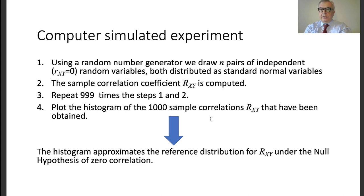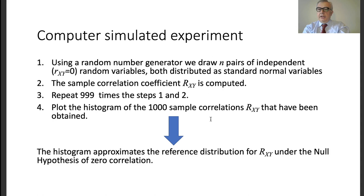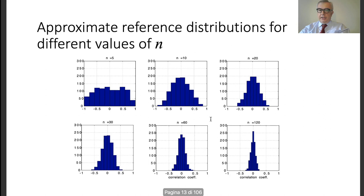I repeat steps one and two 99 more times — giving 1,000 total sample correlations. With 1,000 realizations, I can draw a histogram that serves as a good approximation of the reference distribution for the sample correlation under the null hypothesis of zero correlation. The key question is how many pairs n I draw. I tried n = 5, 10, 20, 30, 60, and 120 — my situation resembles the last case since I had more than 100 students.